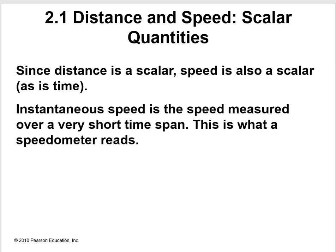Instantaneous speed is the speed measured over a short time span. This is what a speedometer reads. Instantaneous speed, short time span. Usually we're talking something around a second, smaller than a second, maybe a millisecond, a tenth of a second, but very small time spans.